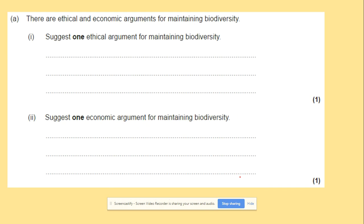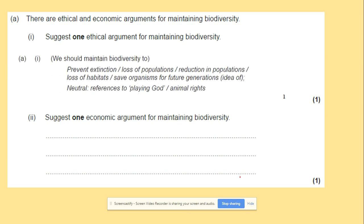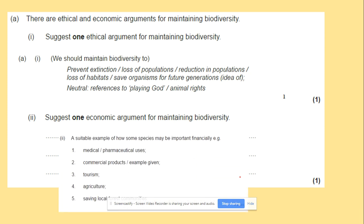Just one ethical argument for maintaining biodiversity. Here could be the fact that loss of population, reduction in population, loss of habitat. So again, the same vocabulary. And one economic argument for maintaining biodiversity. What we've mentioned before: medical, tourism, agriculture, commercial products.